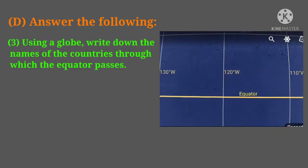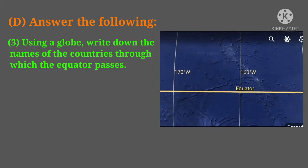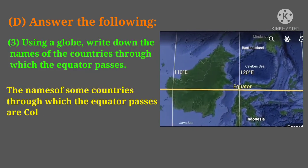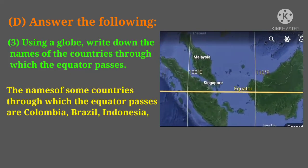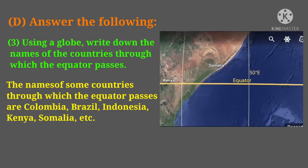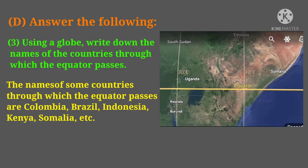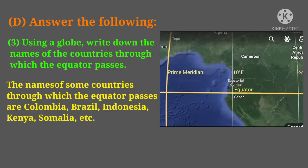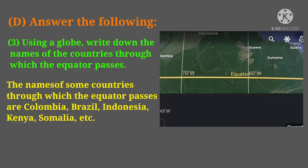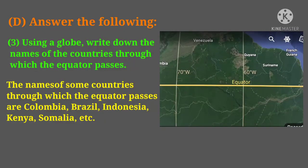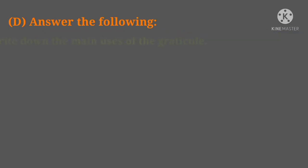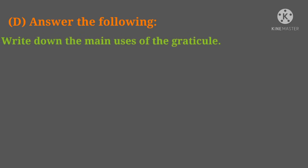Question number three: using a globe, write down the names of the countries through which the equator passes. The countries through which the equator passes are Colombia, Brazil, Indonesia, Kenya, Somalia, etc.